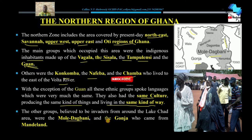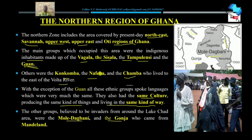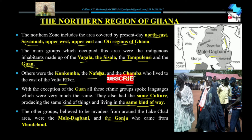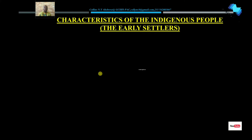The other groups believed to be invaders were the Mole-Dagbani, who came from the Mande land area around Lake Chad, and the Gonja. These two ethnic groups were not indigenous — they migrated from elsewhere to invade the Vagala, Sisala, and Tampulisi groups, then ruled and controlled them. Now these indigenous tribes are in the minority. Be very careful: when asked to name the indigenous ethnic groups of northern Ghana, the answer is different from simply naming any four ethnic groups of northern Ghana.